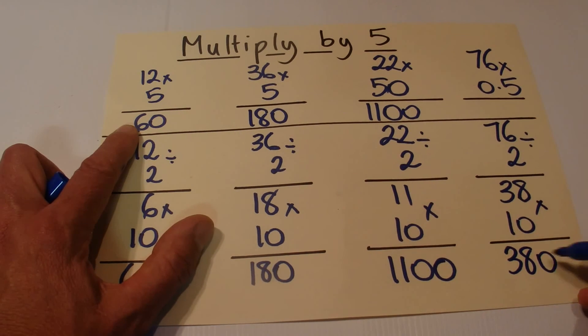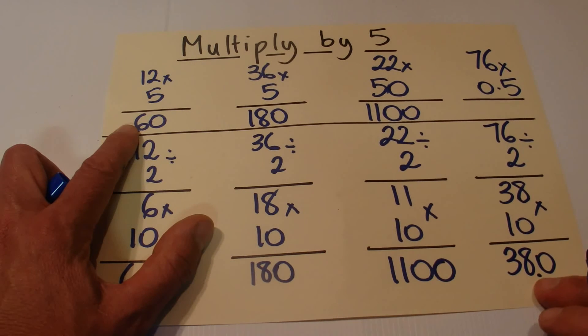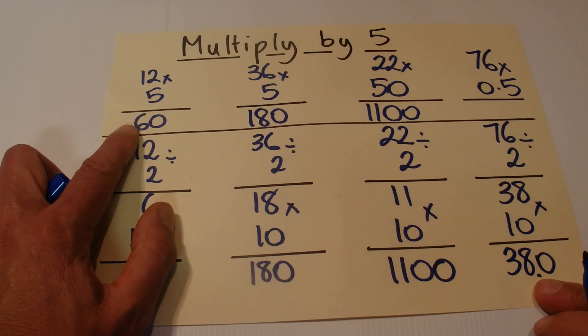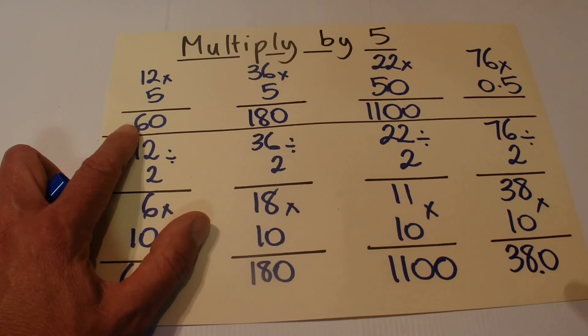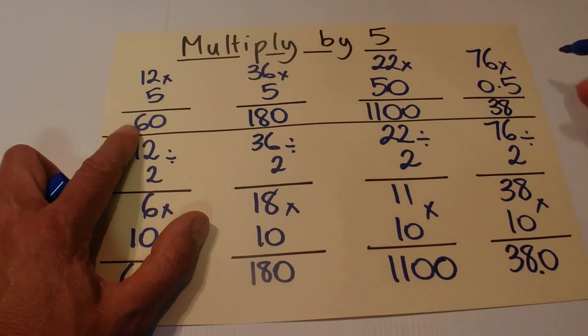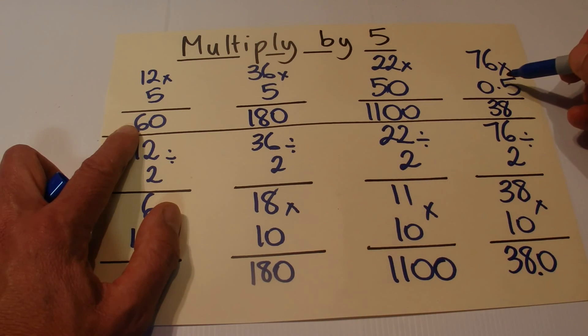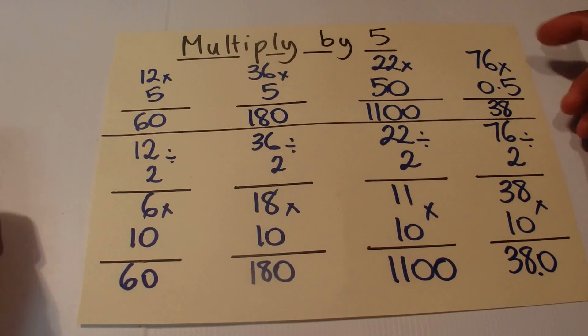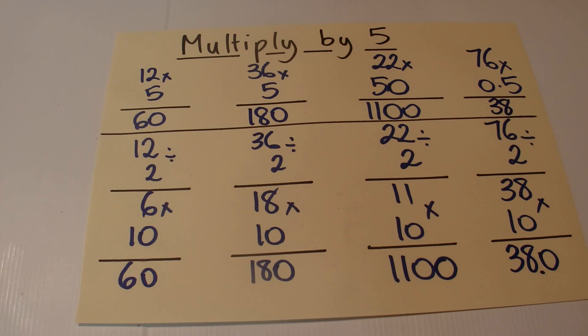We put a decimal point in one space on the right, so the 380 becomes 38, and that's the answer to 76 times 0.5 is 38. Okay, hope you've enjoyed this video. Thanks for watching, bye for now.